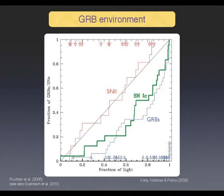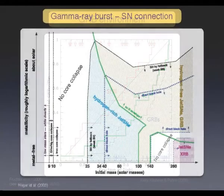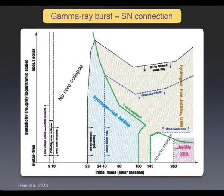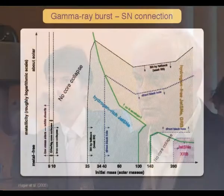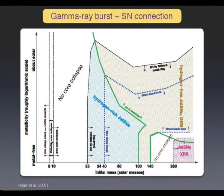So the bottom line — and I'm not a supernova person, but I'd like to show this — because GRBs occur in regions where the supernova connection is supernovae 1C or 1B, and these are the most massive stellar explosions in the universe.